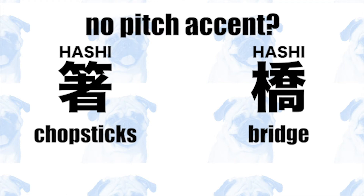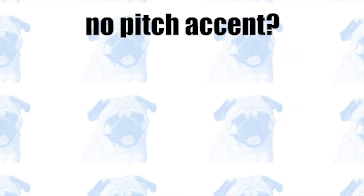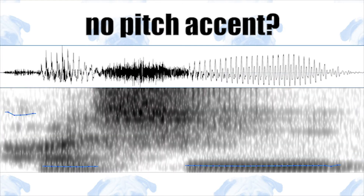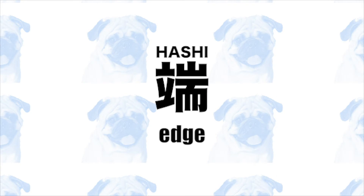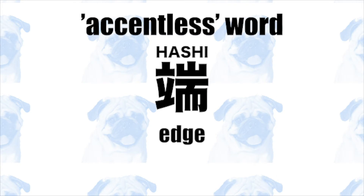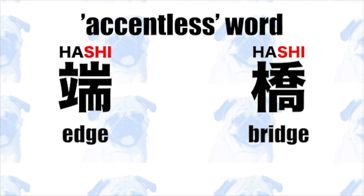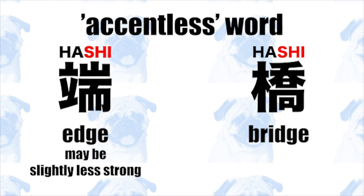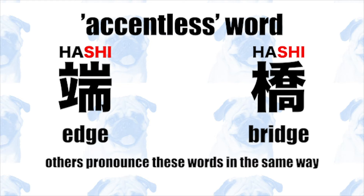How about if I say these words without any stress or accent? Hashi, hashi, hashi. This time, the spectrogram shows both blue lines on the same level. Now, how about the third word — hashi, meaning edge? This third member is what's called an accentless word. This terminology is misleading, however, because this so-called accentless word has an accent or stress on the final mora. The only possible difference is that the stress on the accentless word, edge, can be slightly less strong for some speakers, while other speakers might have exactly the same pitch accent.